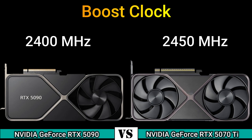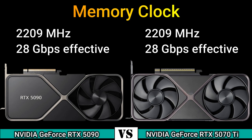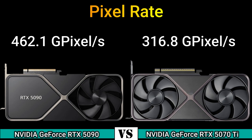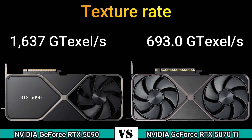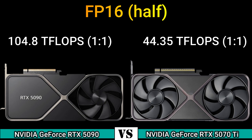Memory clock 2209 MHz, 28 GB/s effective. Pixel rate 462.1 GPixels/s and 316.8 GPixels/s. Texture rate 1637 GTexels/s and 693.0 GTexels/s. FP16 half: 104.8 TFLOPS at 1:1 and 44.35 TFLOPS at 1:1.